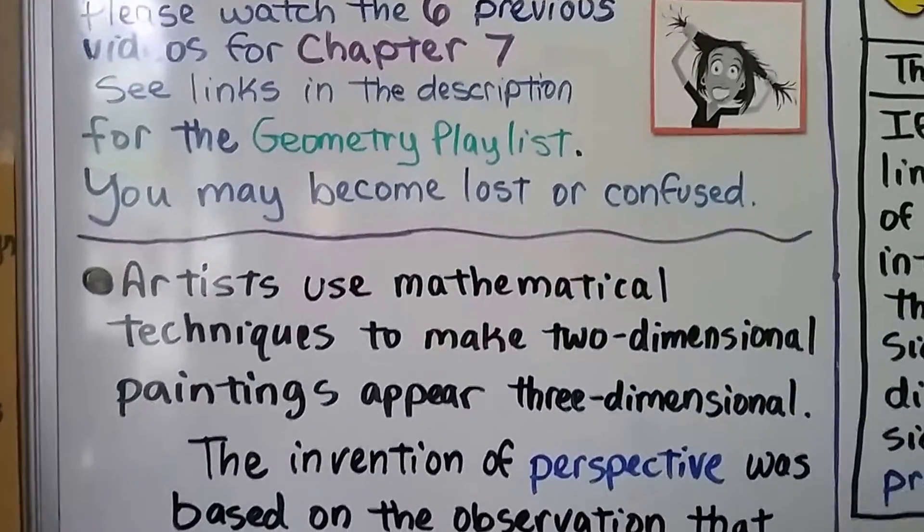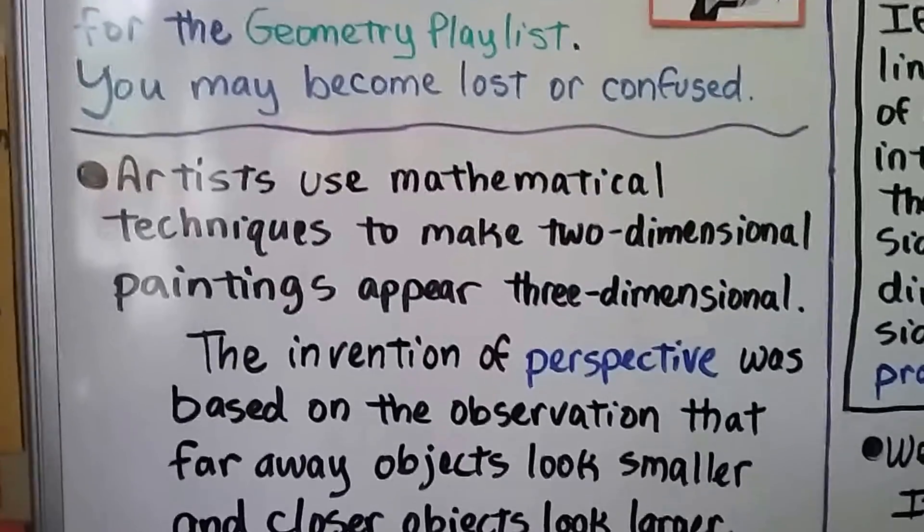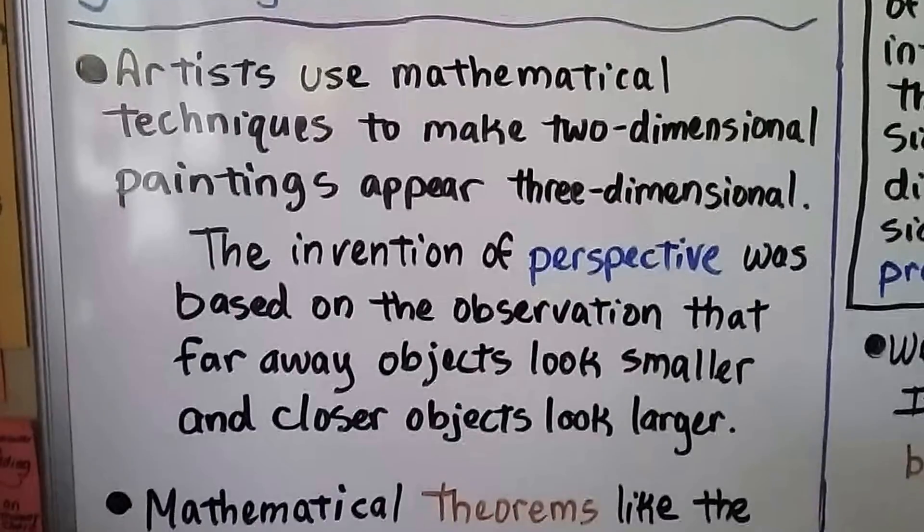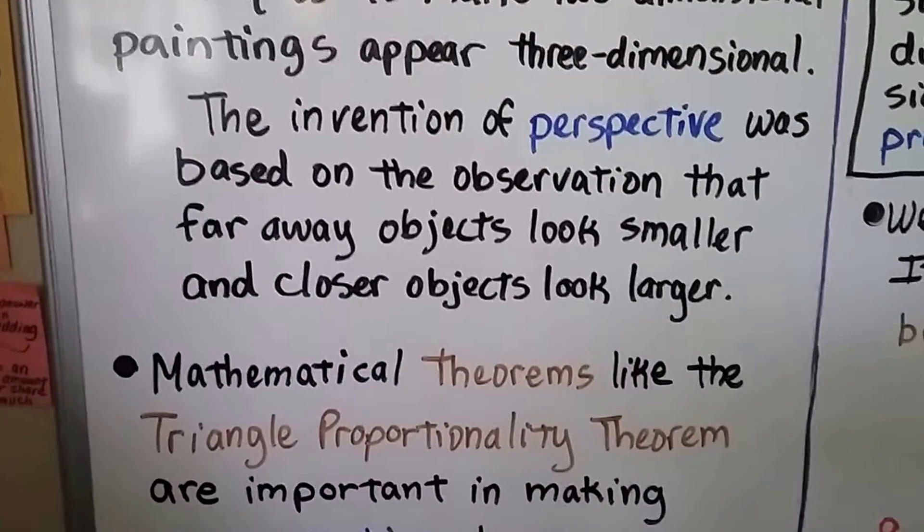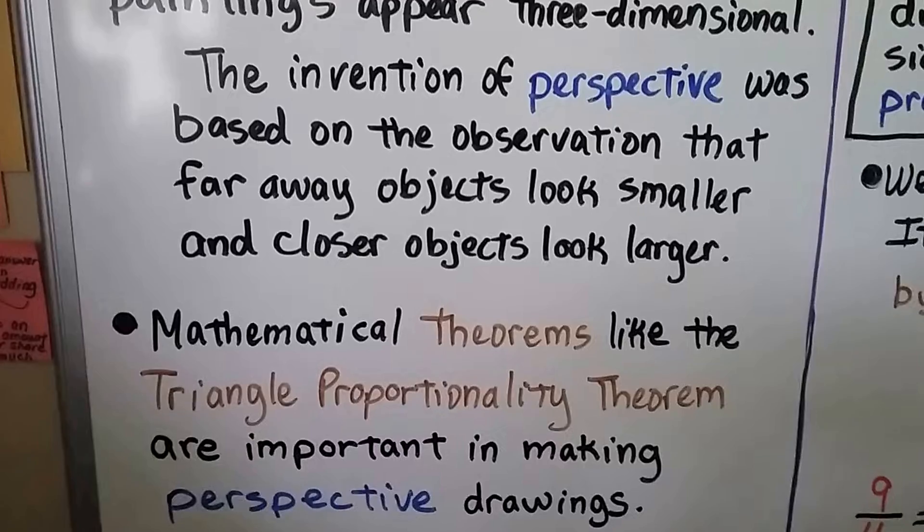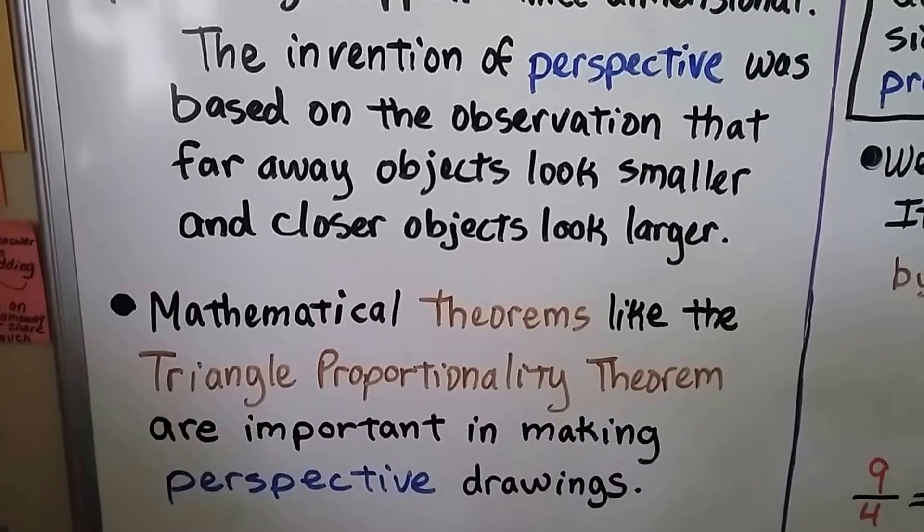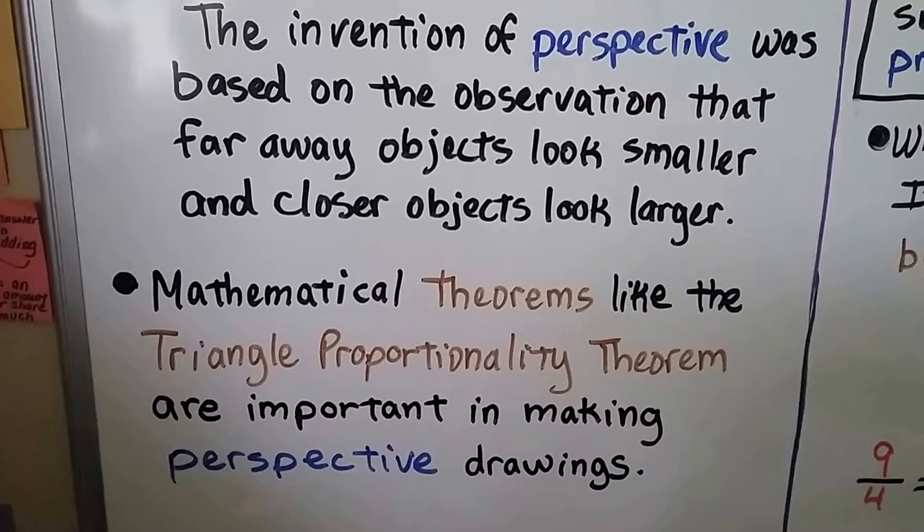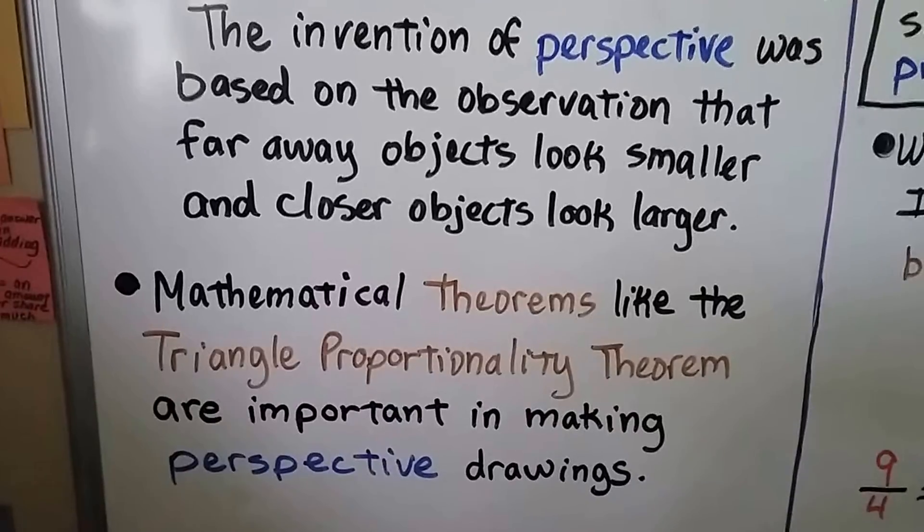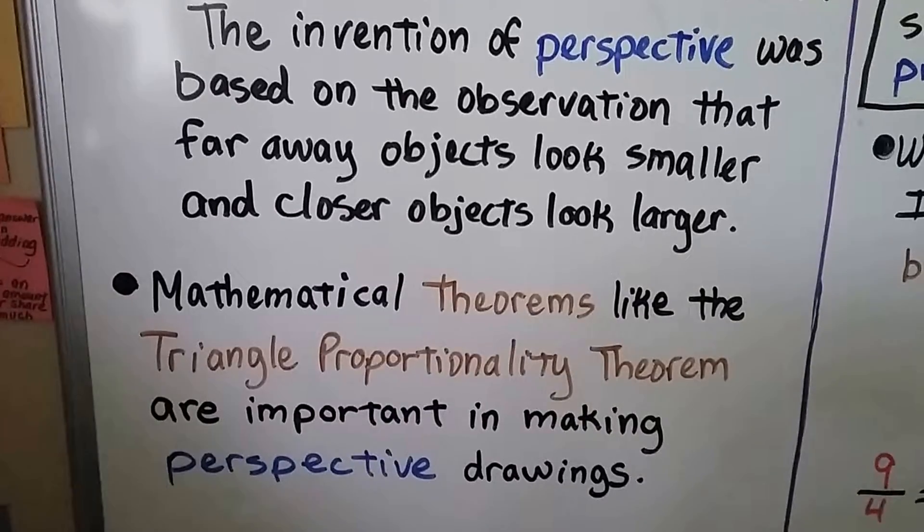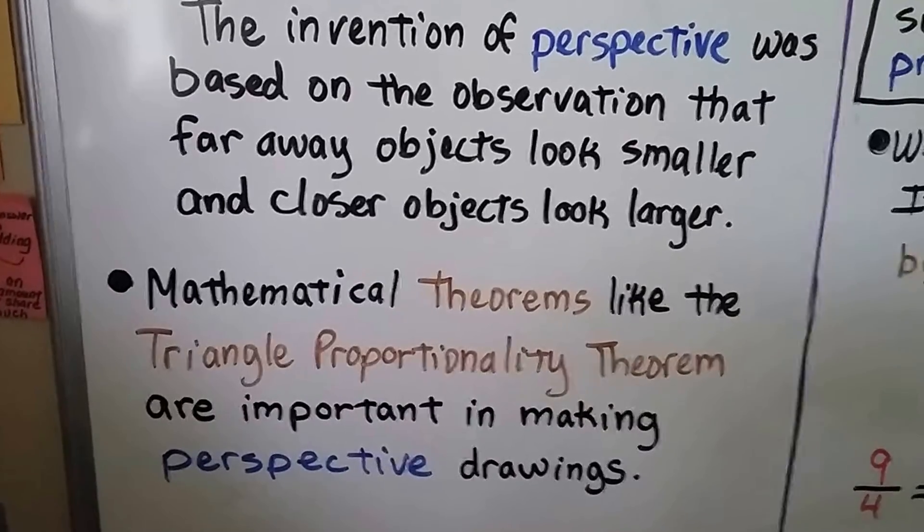Artists use mathematical techniques to make two-dimensional paintings appear three-dimensional, and the invention of perspective was based on the observation that faraway objects look smaller and closer objects look larger. Mathematical theorems, like the triangle proportionality theorem, are important in making perspective drawings.